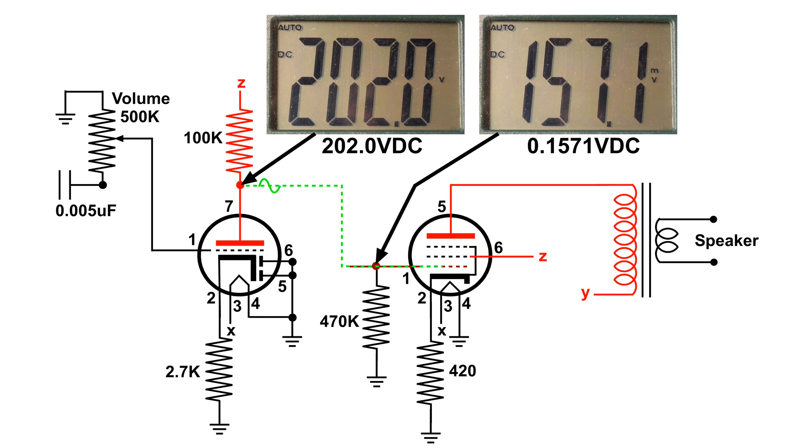So we cannot hook a wire from pin 7 to pin 1 because we'd end up with at least 200 volts on pin 1 and the tube on the right would not function.